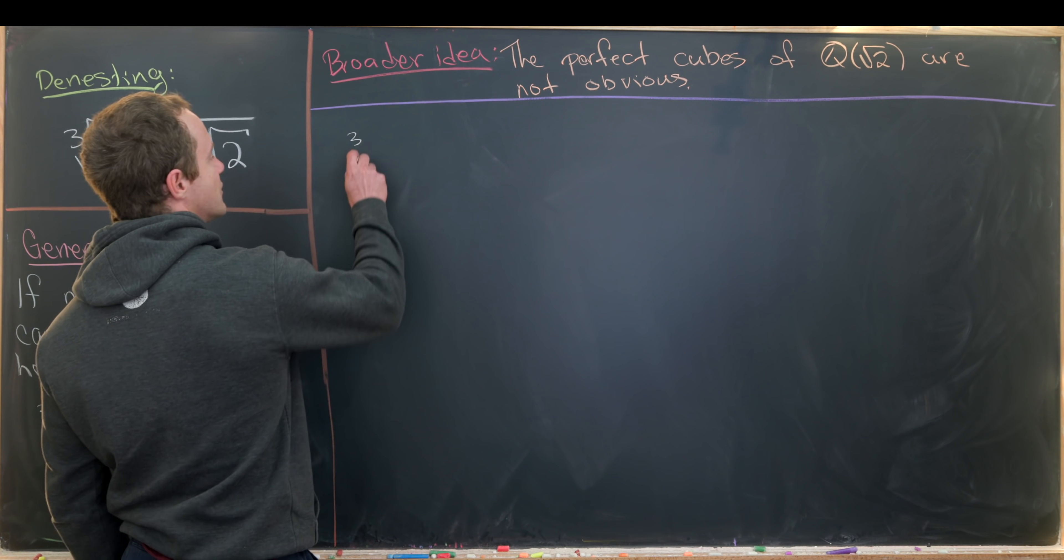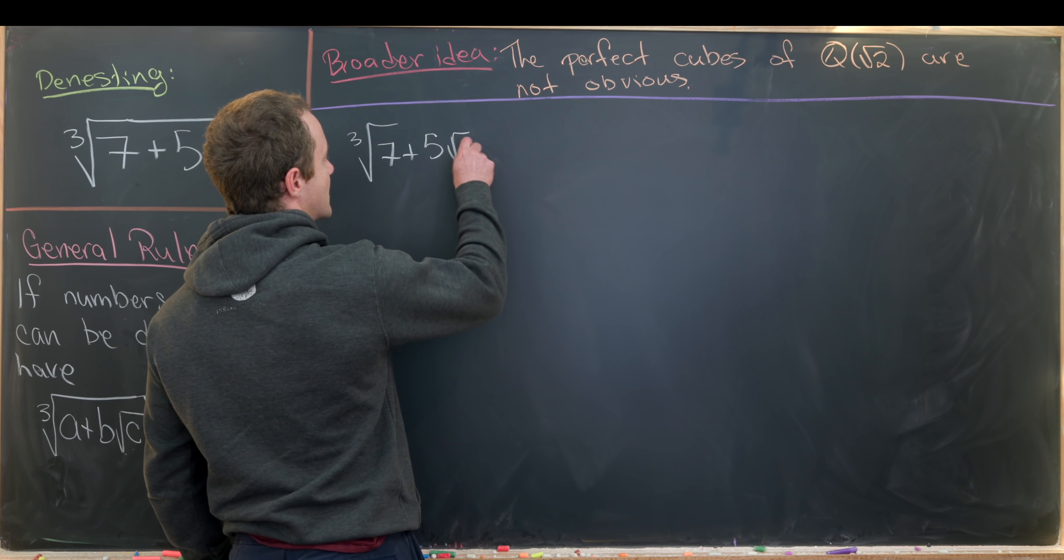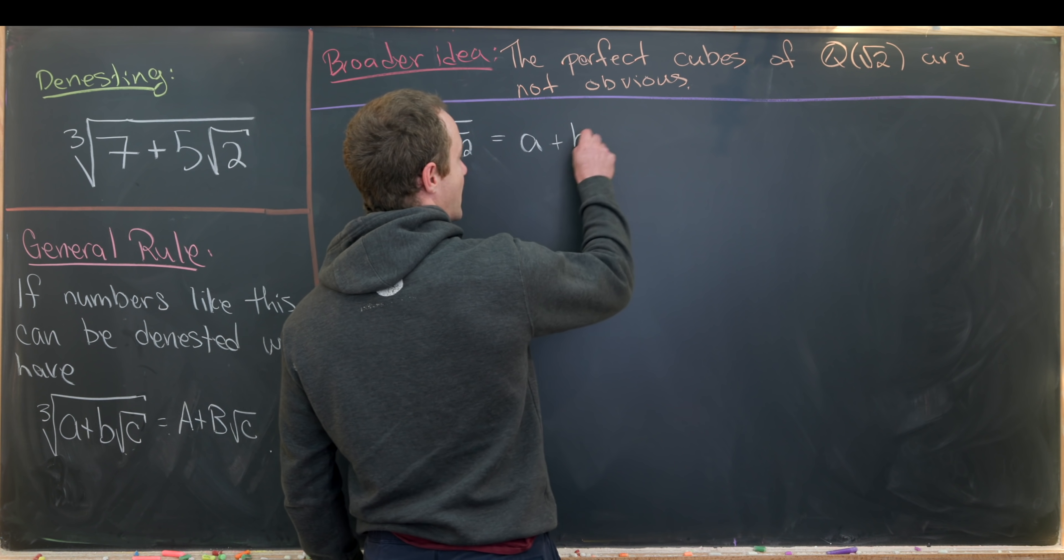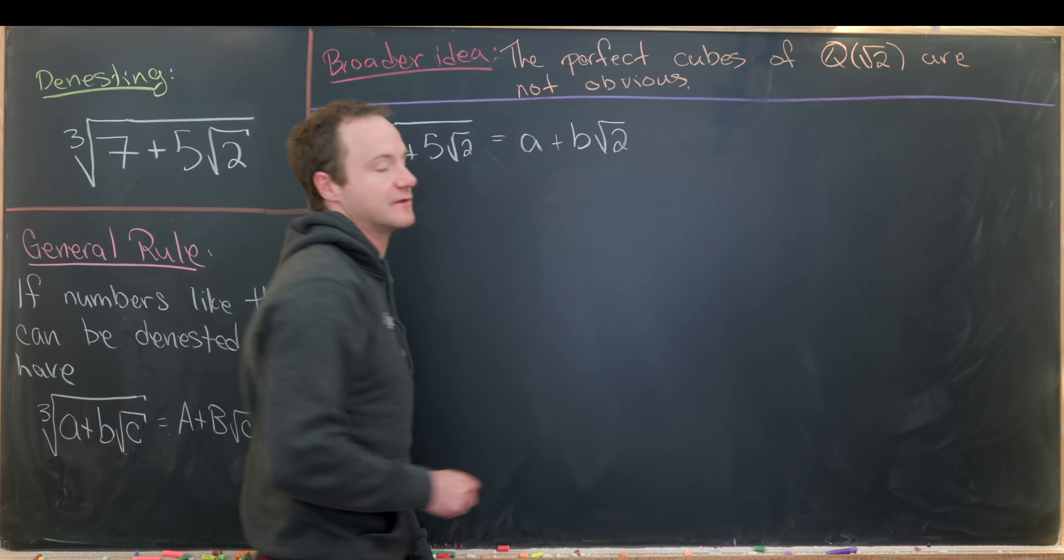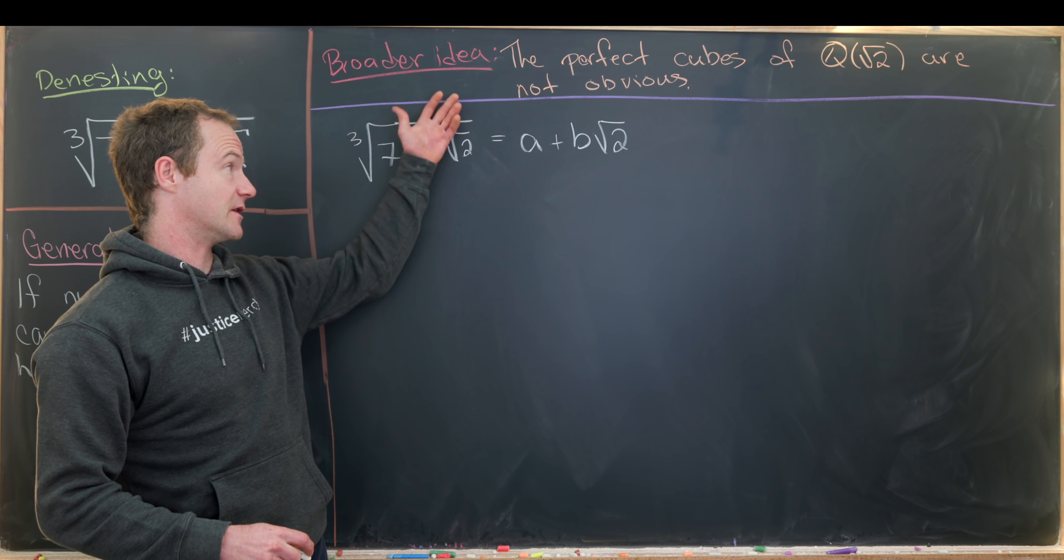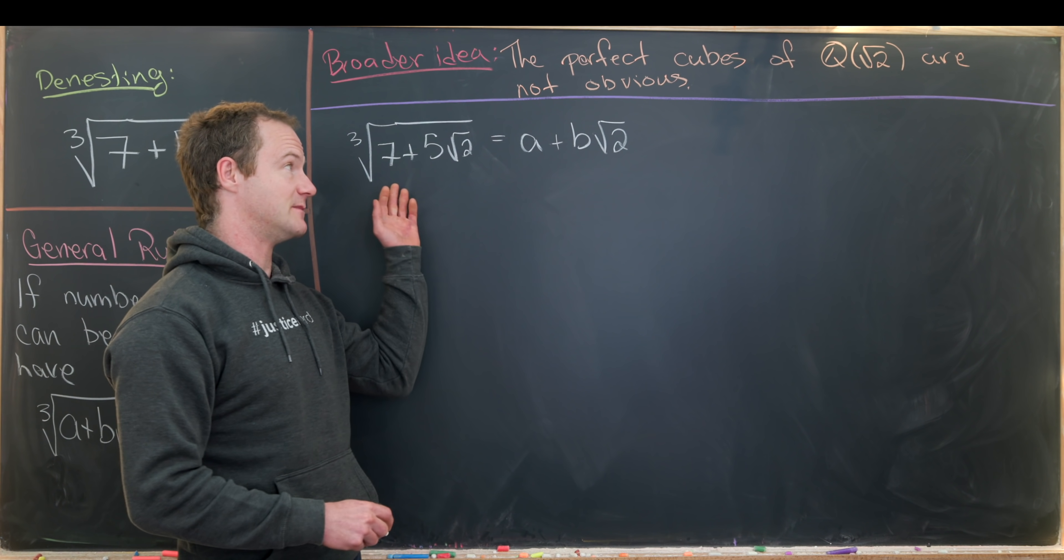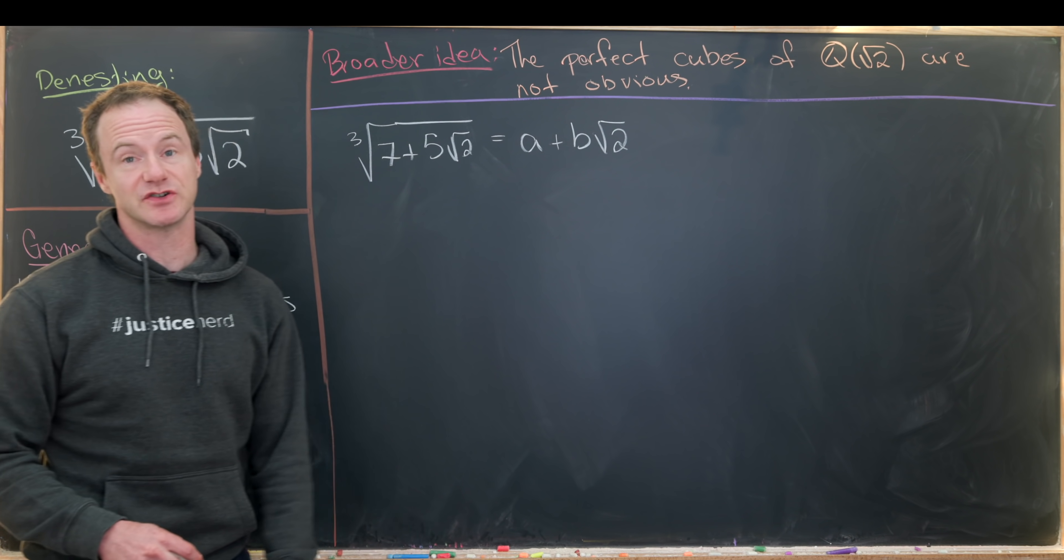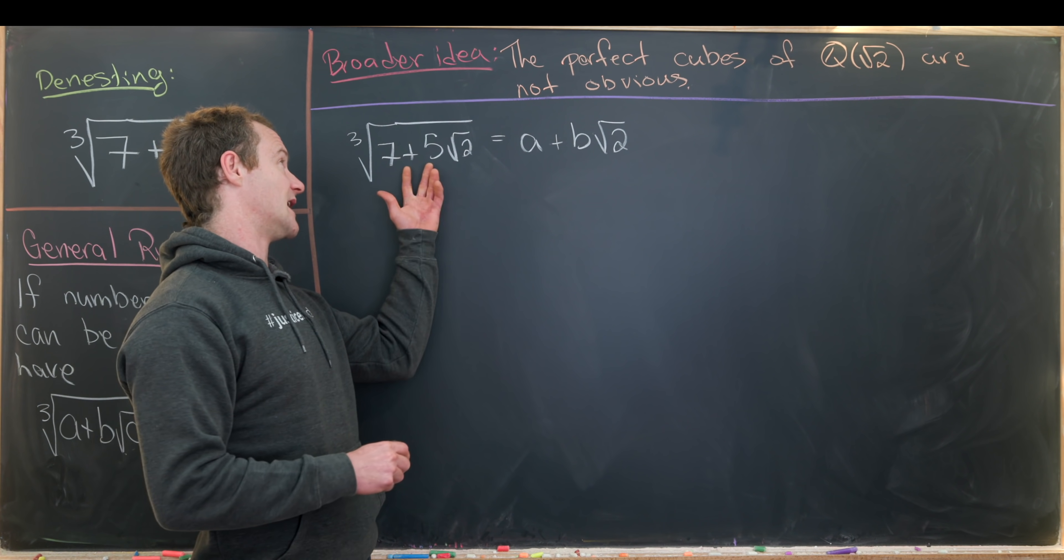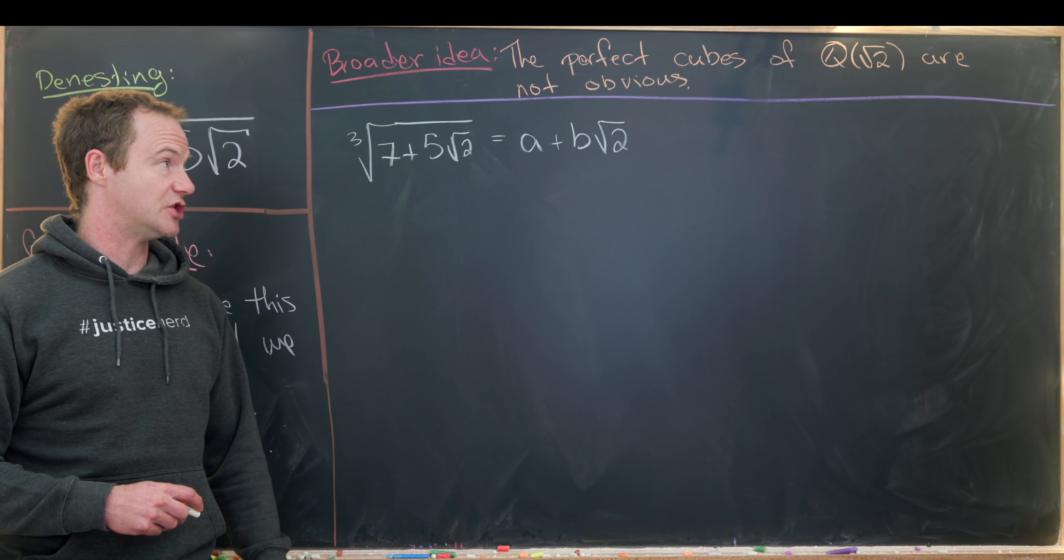Okay so let's take the cube root of seven plus five times the square root of two and assume that we can hopefully write it as a plus b times the square root of two. And since we've got this kind of broader idea up here that this is actually showing that seven plus five root two is a perfect cube. That means that this denesting procedure is probably not available all of the time because not everything that you can think of like this is a perfect cube in Q adjoined root two.